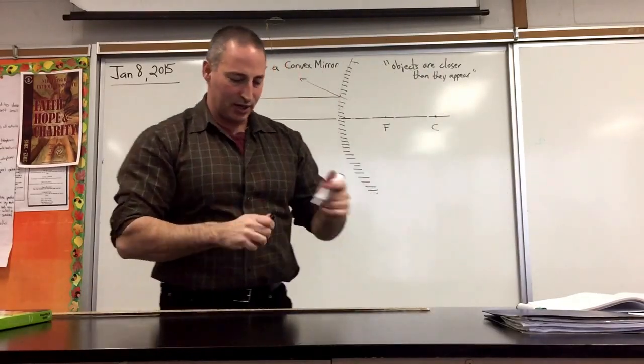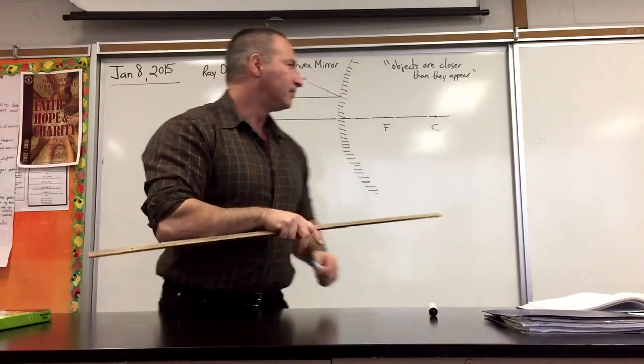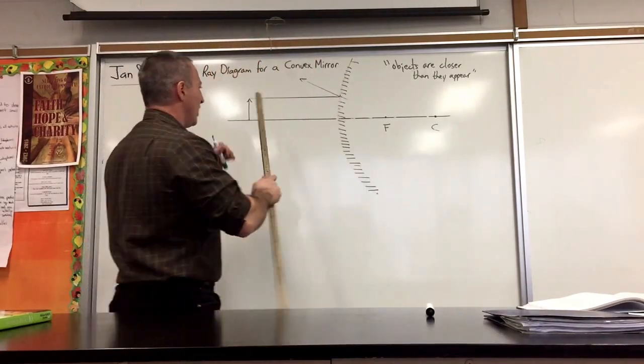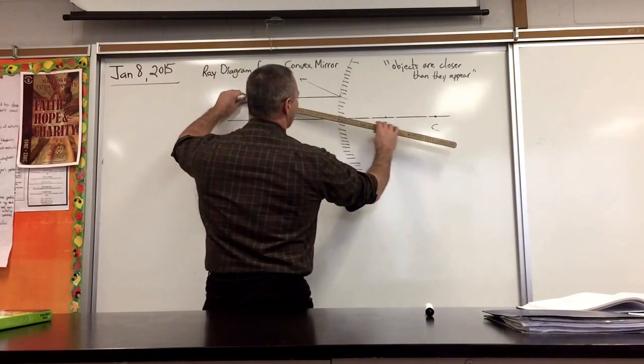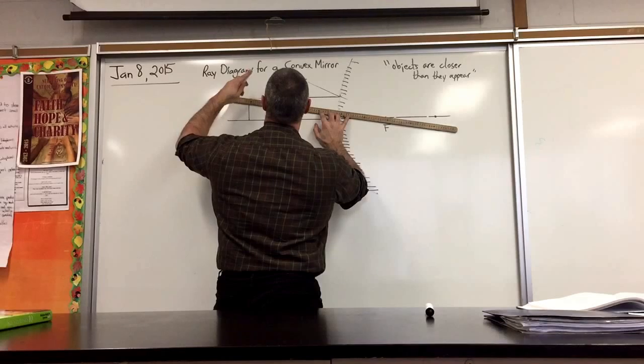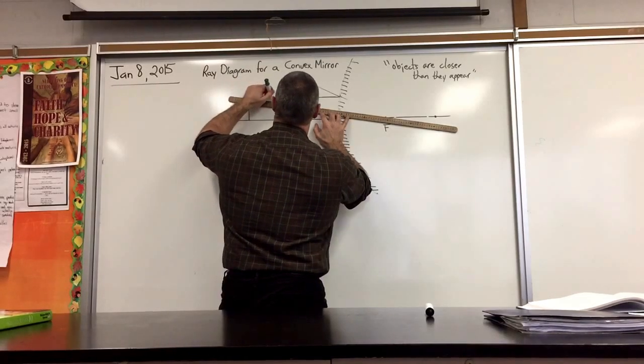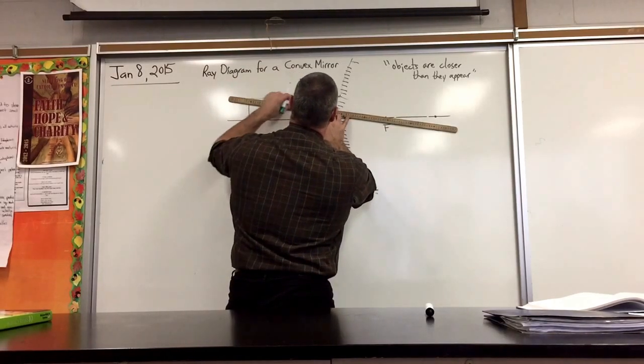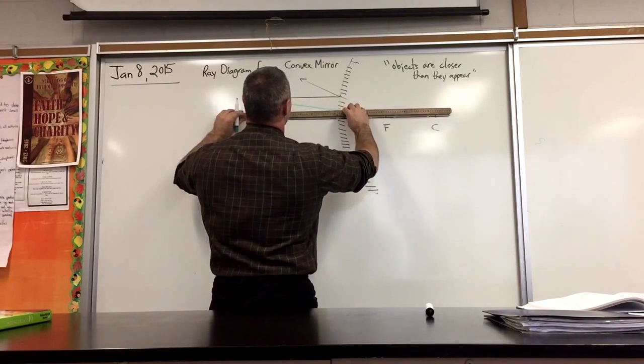Then you draw a second ray. I'm going to use green for that one. The second ray will appear to go towards the focus. But when it reflects from the surface of the mirror, it will reflect back parallel to the principal axis.